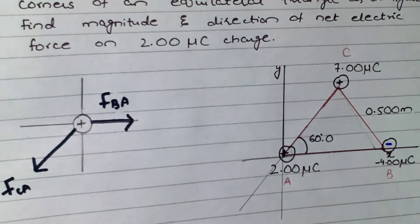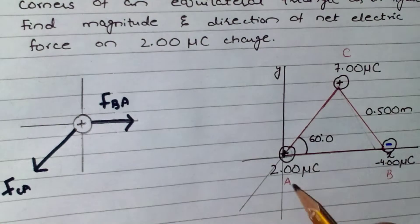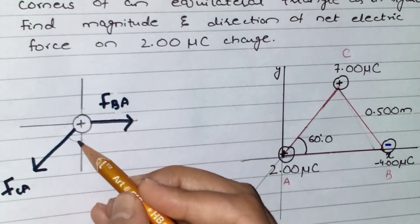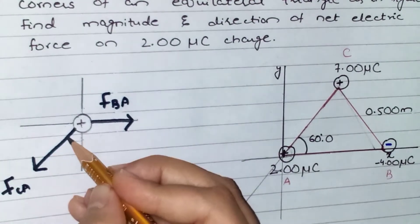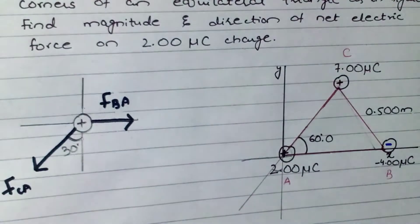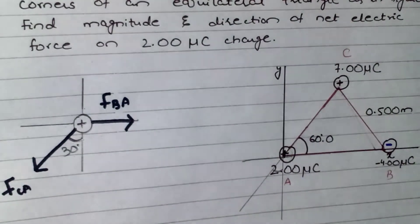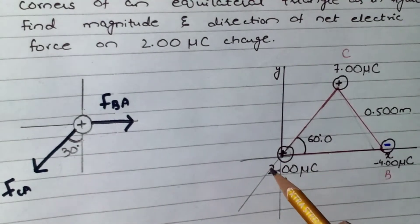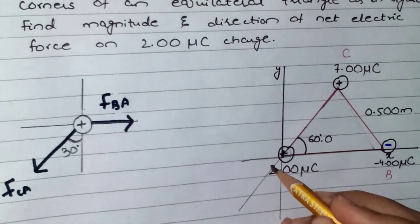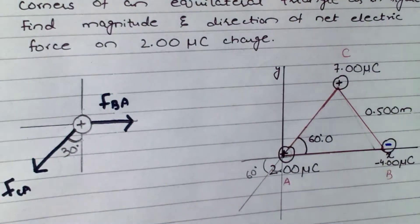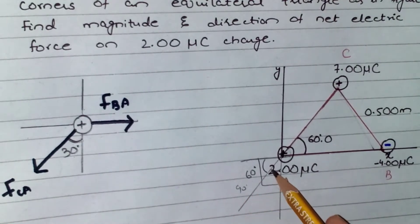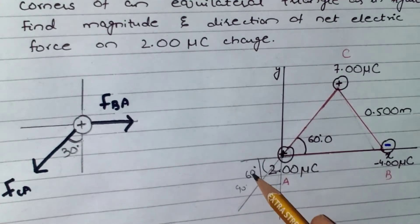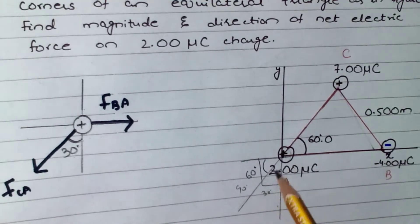It's quite obvious that the angle between Fca and the x-axis is 30 degrees. We know from geometry that vertically opposite angles are equal, so if the interior angle of the equilateral triangle is 60 degrees, the angle on the other side is also 60 degrees. Since the angle between x and y axes is 90 degrees, subtracting gives 90 − 60 = 30 degrees.